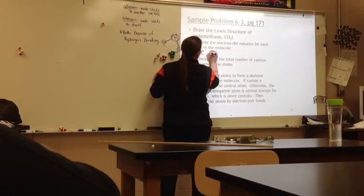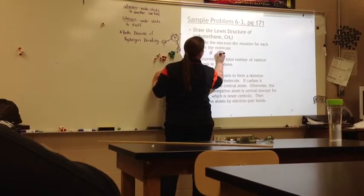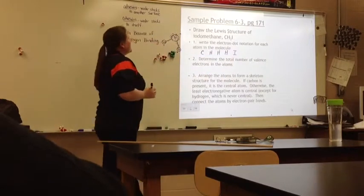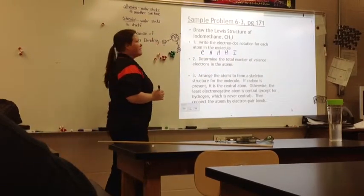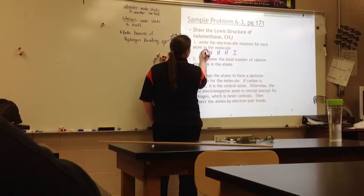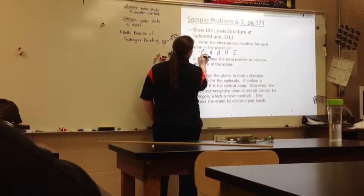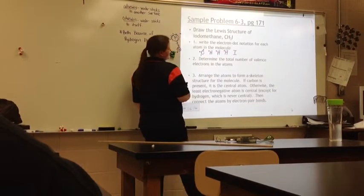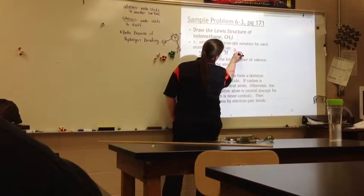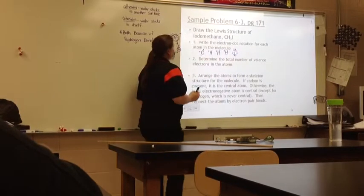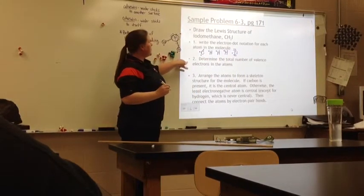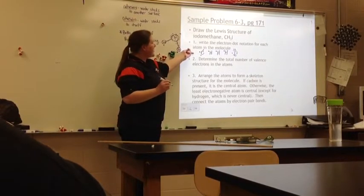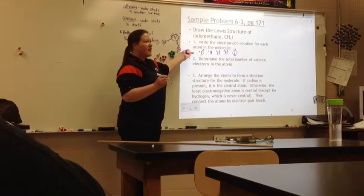First thing we're going to do is write the electron dot notation for each atom in the molecule. So I have one carbon, three hydrogens, and an iodine. Electron dot notation is where I write my valence electrons. Carbon group 14 has four. Each hydrogen has one. Iodine group 17 has seven.